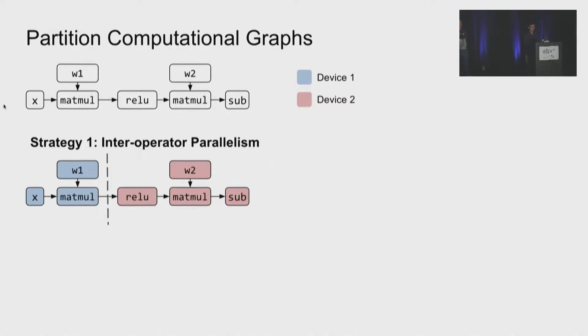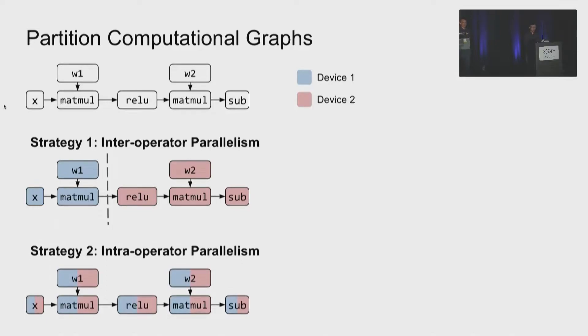However, due to data dependency, the second device cannot always be busy because it has to wait for the first device to generate its input. So the second device will be idle at some time. Although this can be eliminated by using pipelining, it will still result in device idle time due to the dependency between forward propagation and backward propagation. So now if we want all devices to be busy, what should we do?